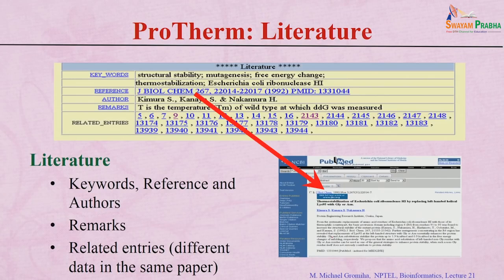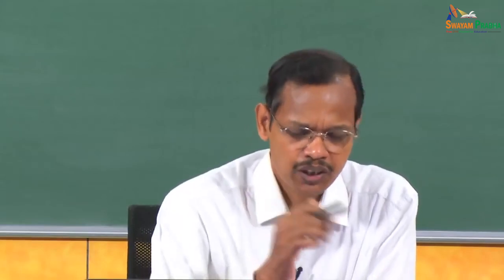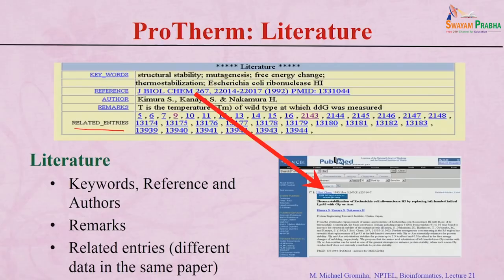We provide the keywords used in the paper and the original reference — for example, published in JBC — with a link to PubMed so you can access the full text for most journals. We also provide related entries: for any particular mutant or delta G value, we list entries with similar proteins and similar mutation types. You can compare different conditions, papers, and data to understand the factors influencing stability.